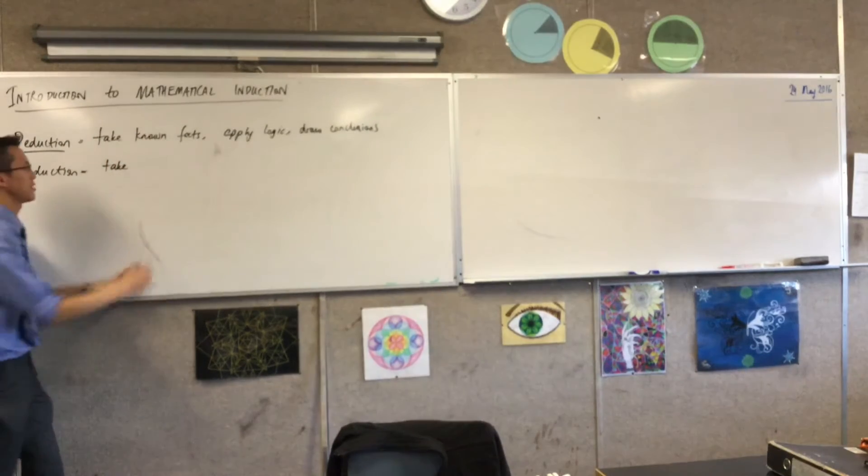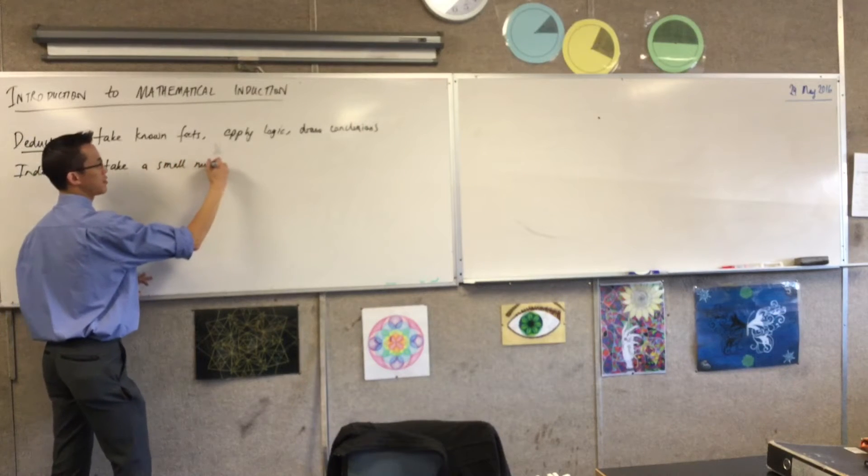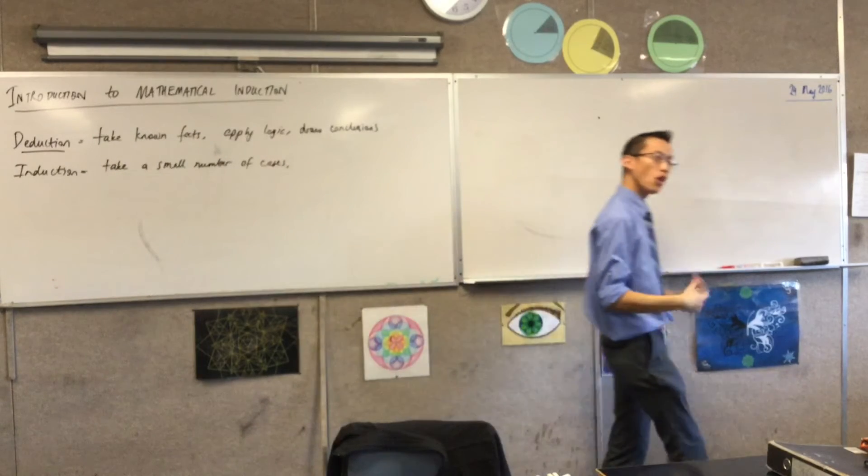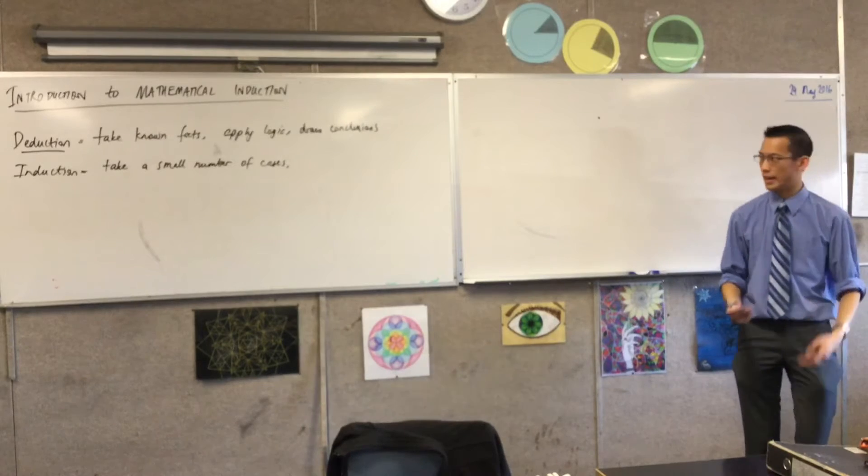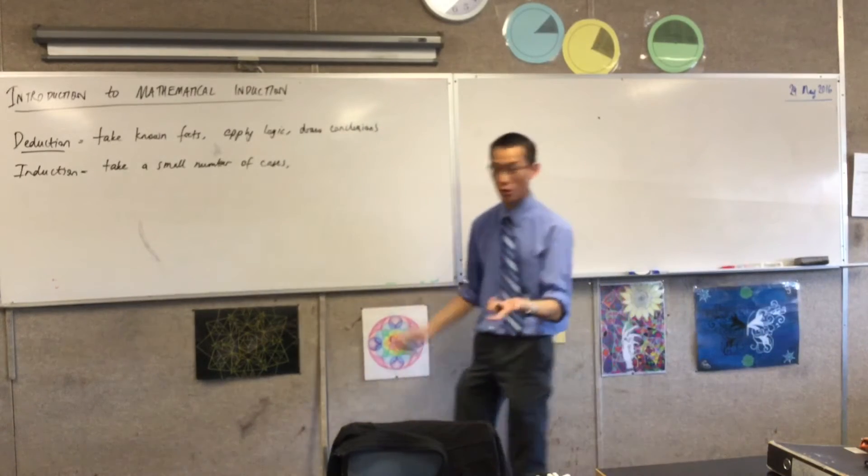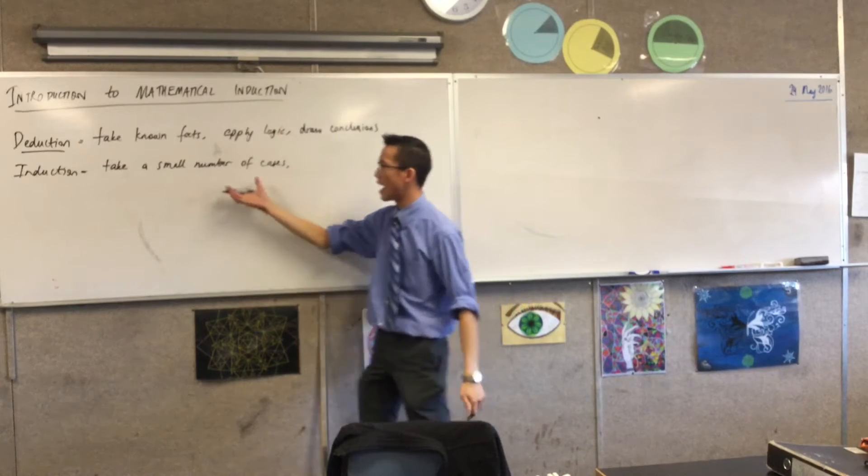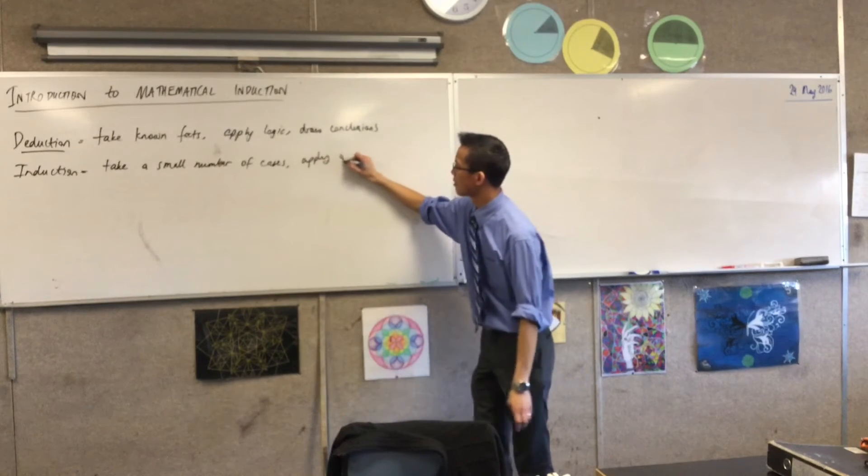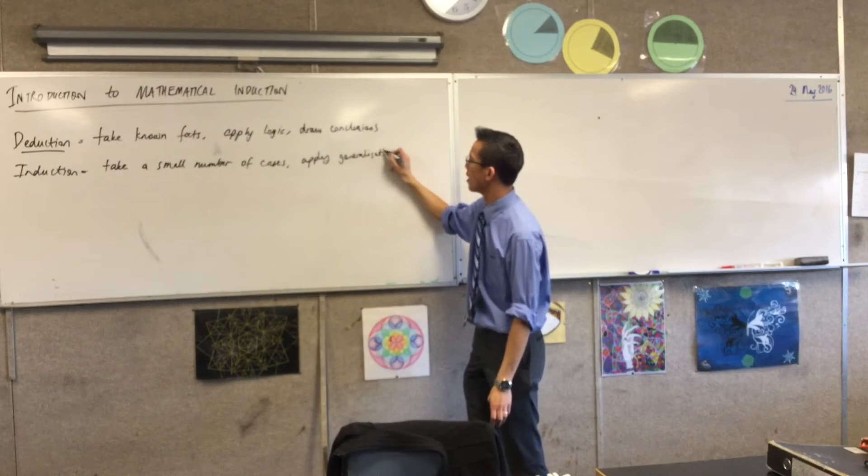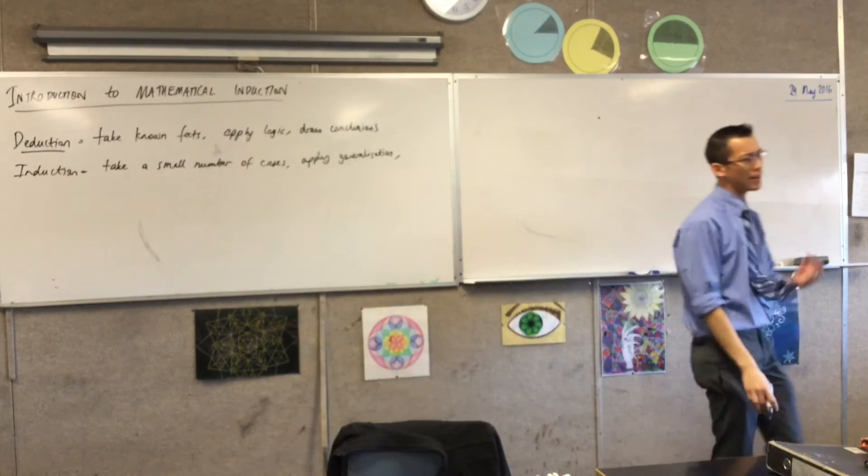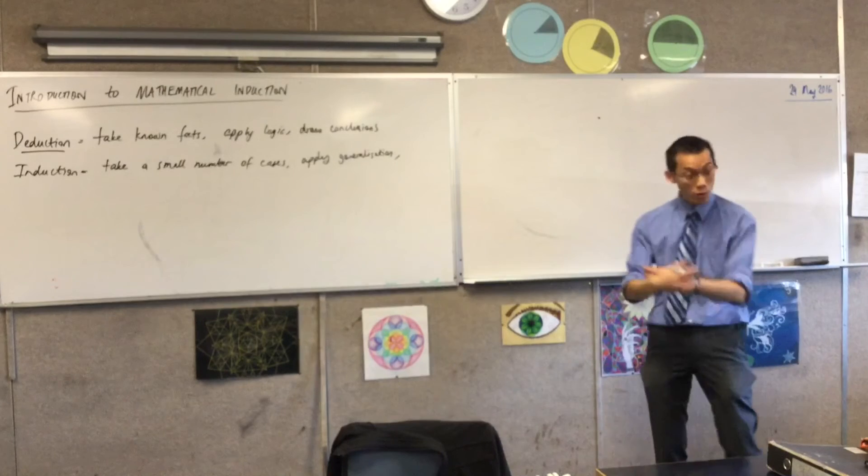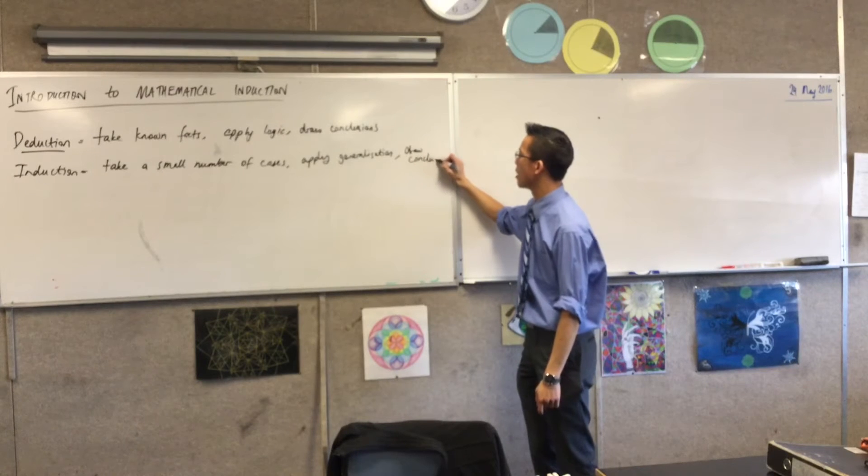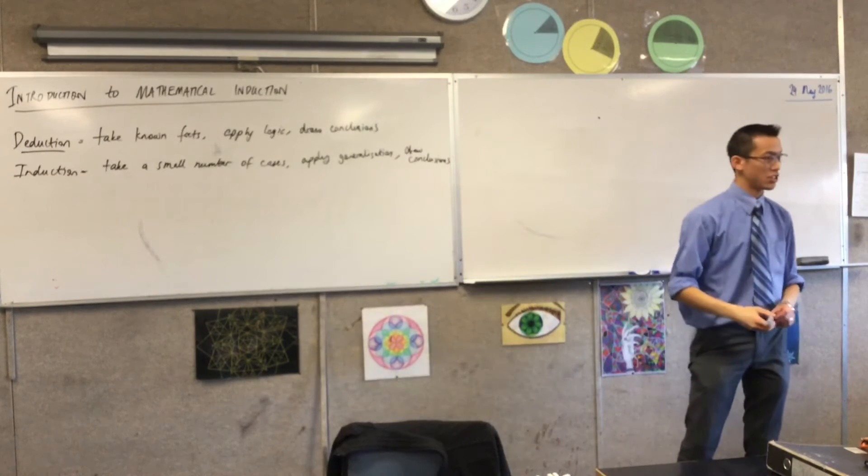I'm going to illustrate this to you in non-mathematical terms in a second. If you have a small number of cases where you observe something happening over and over again, it starts to make you suspicious. So instead of applying logic—because I don't have facts here, I've just seen something happen a few times—I'm going to apply a generalization. I think there's a pattern here, a pattern I can take advantage of. And even if I don't have all of the cases in front of me, I can still draw some conclusions on the basis of the generalization that I think is in operation.